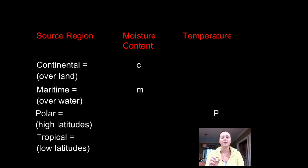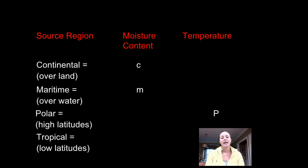We use letters to represent each of these features. For moisture content, continental (dry, forms over land) uses a lowercase c, and maritime (forming over water) uses a lowercase m. For temperature, warmer regions use a capital T for tropical, and cold air masses that form over the poles use a capital P for polar. The lowercase letter goes first, the capital letter goes second when we combine them.